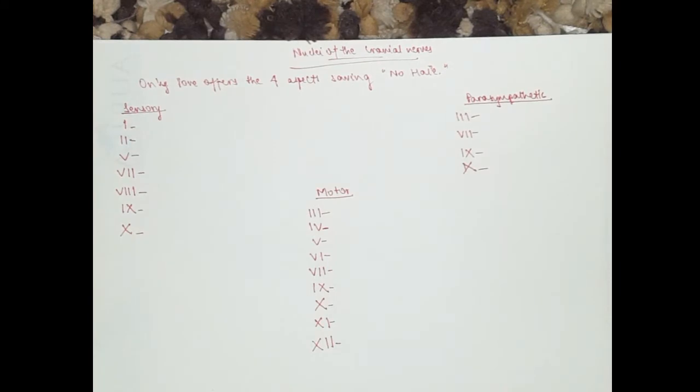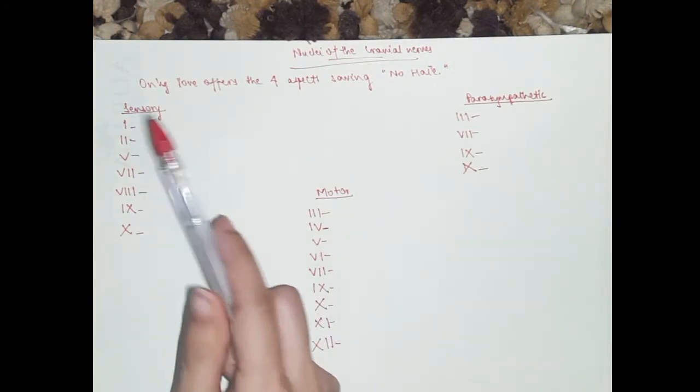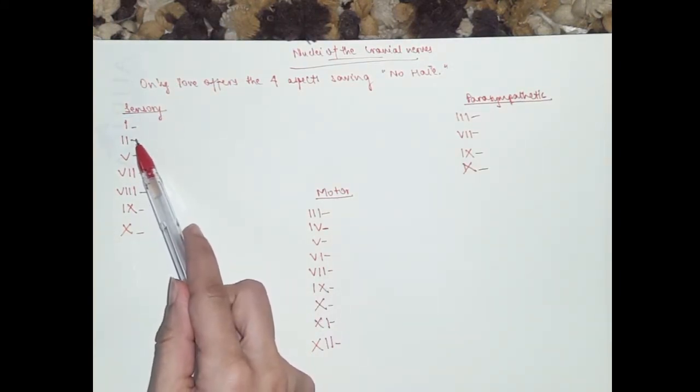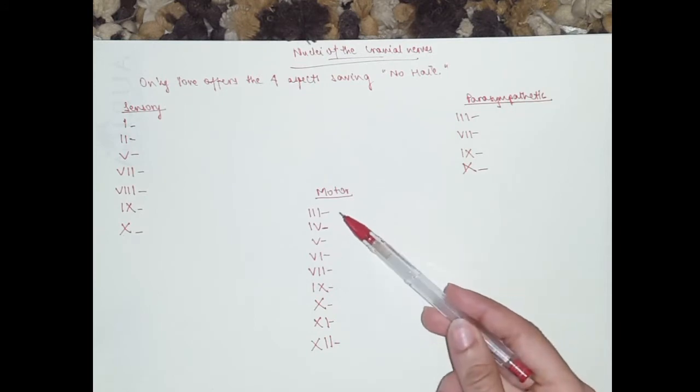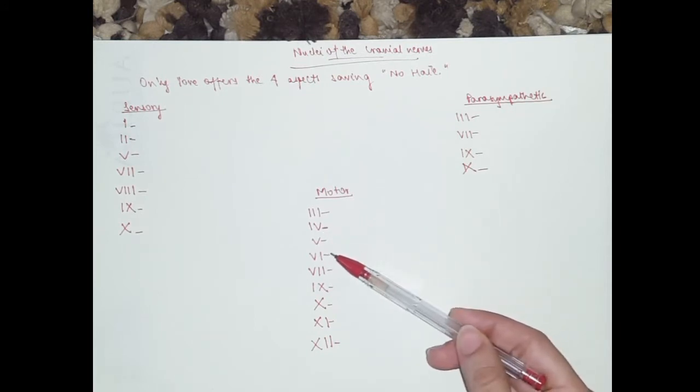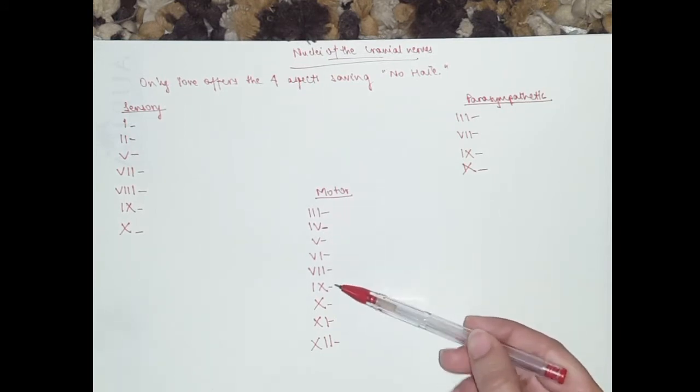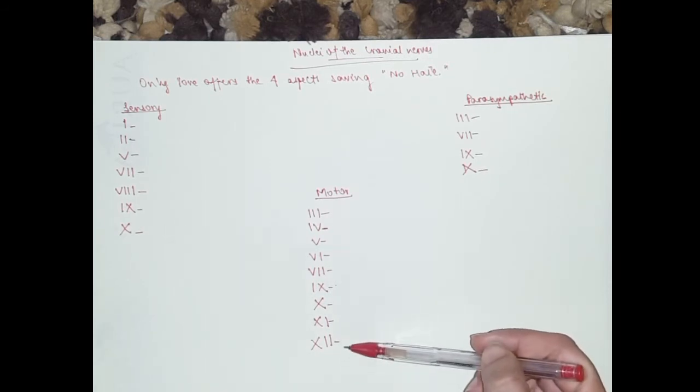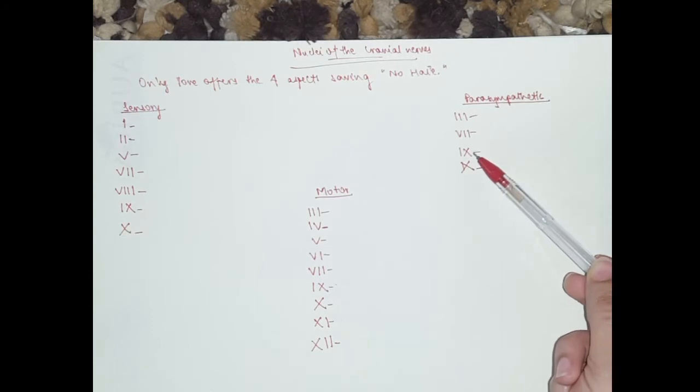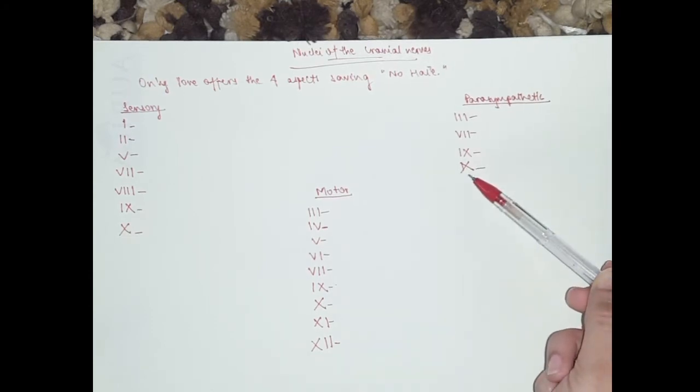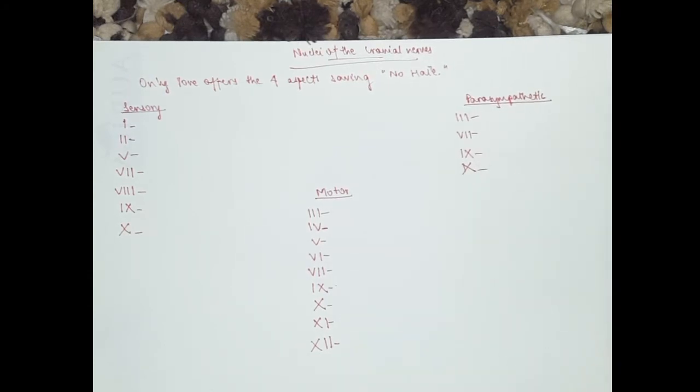So you've got olfactory, optic, trigeminal, facial, vestibular cochlear, glossopharyngeal, vagus, oculomotor, trochlear, trigeminal, abducens, facial, glossopharyngeal, vagus, accessory, hypoglossal, oculomotor, facial, glossopharyngeal, vagus. So we're not going to write the names.